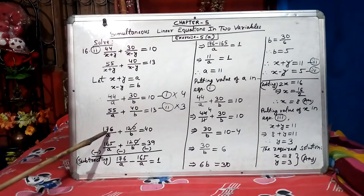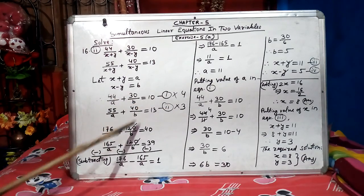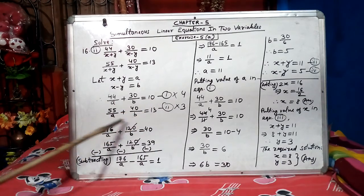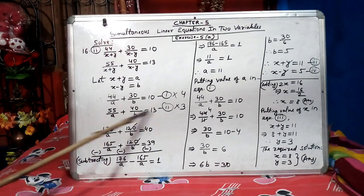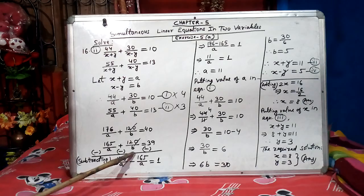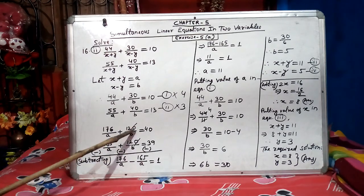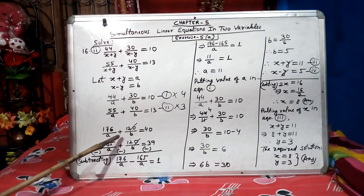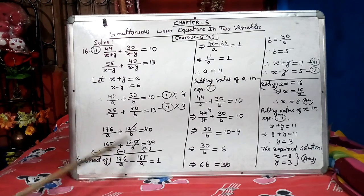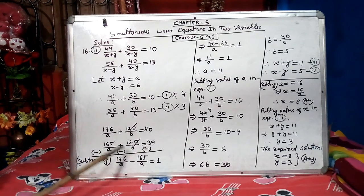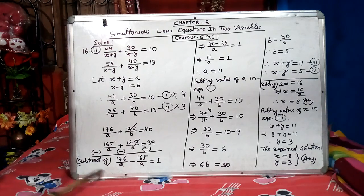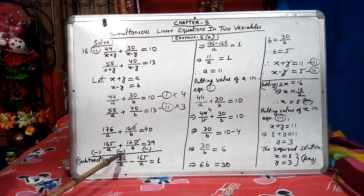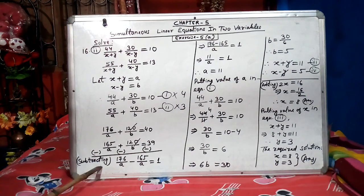44 into 4, 176 by a. 30 into 4, 120 by b. 10 into 4 is 40. 55 into 3, 165 by a. 40 into 3, 120 by b. 13 into 3 is 39. Now, both b has become same but both are in plus coefficient. They are plus symbol. So one should be minus. So to bring minus, we will do subtracting. This you all know, that when we have both plus plus symbol, to make it subtraction minus symbol, we do subtracting.